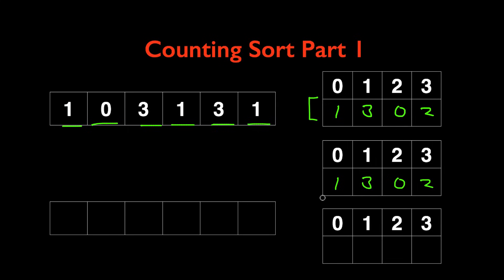Once we have these numbers, the number of occurrences for each number, the second step is going to be adding each number to the right of it accumulatively.